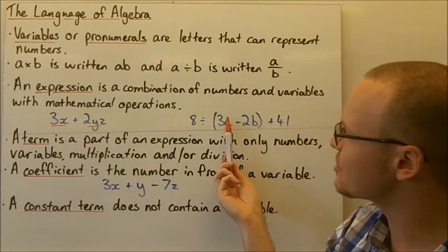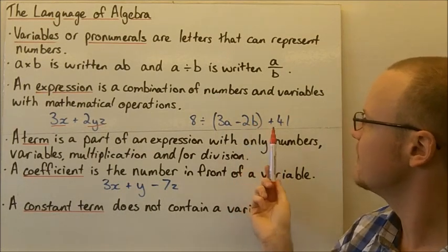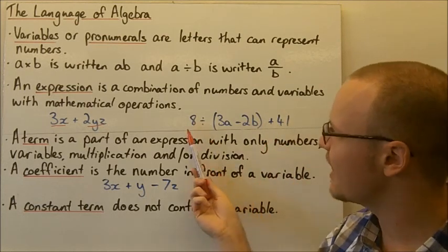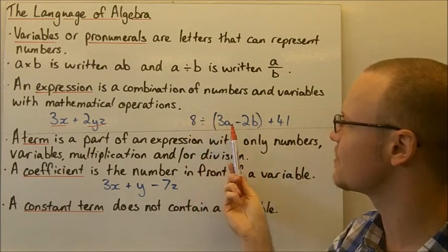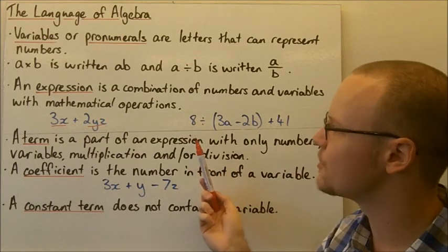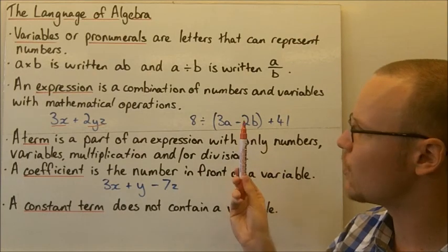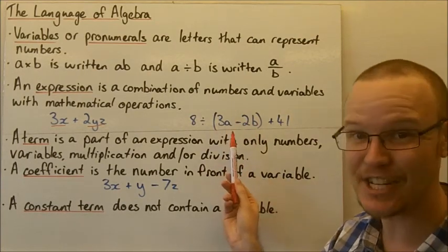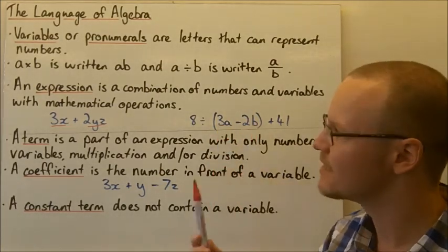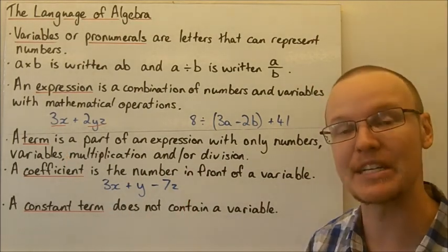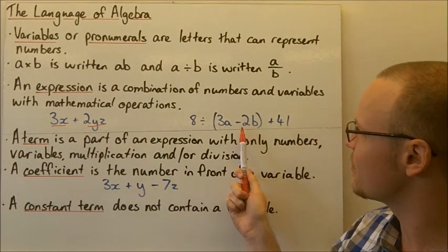In the second expression, 3a is a term, 2b is a term, and 41 is a term as well. 8 is its own term, because otherwise we'd have to incorporate the whole division — 8 divided by the whole bracketed expression. So 8 is its own term, and terms just can't have subtraction or addition within them. So 3a minus 2b is not one term — that's two terms: 3a and 2b. Essentially, a term is any part of an expression separated by addition or subtraction.